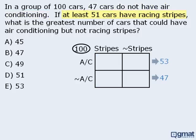Next we're told that at least 51 cars have racing stripes. Since these two boxes are reserved for cars with racing stripes, the sum of these two boxes must be at least 51. The sum of the two highlighted boxes can be 51, 52, 53, and so on. If we have at least 51 cars with racing stripes, then there must be at most 49 cars without racing stripes, so the sum of these two boxes must be at most 49.